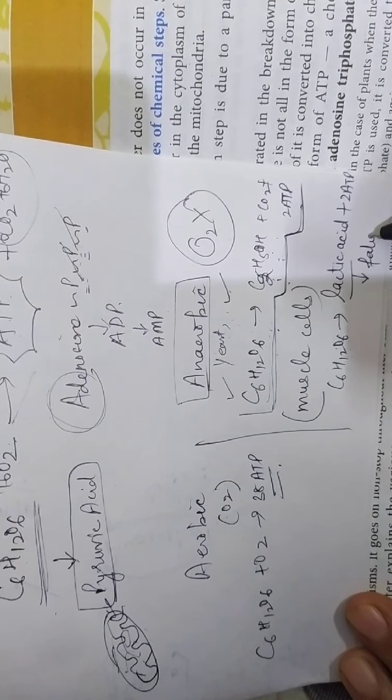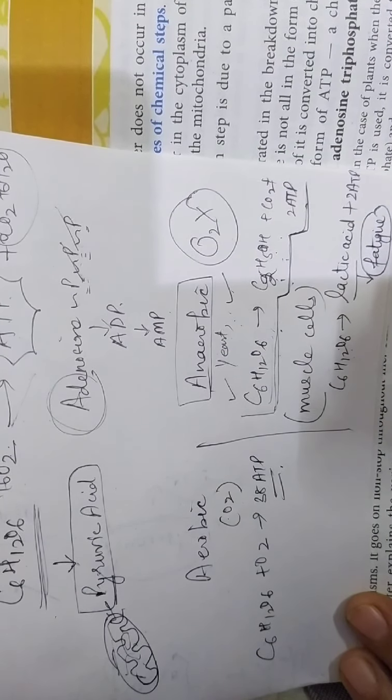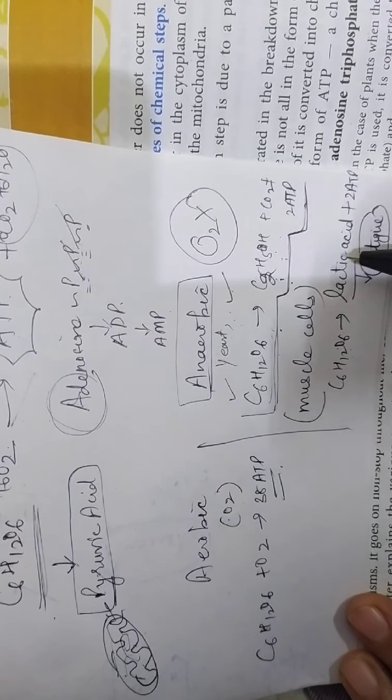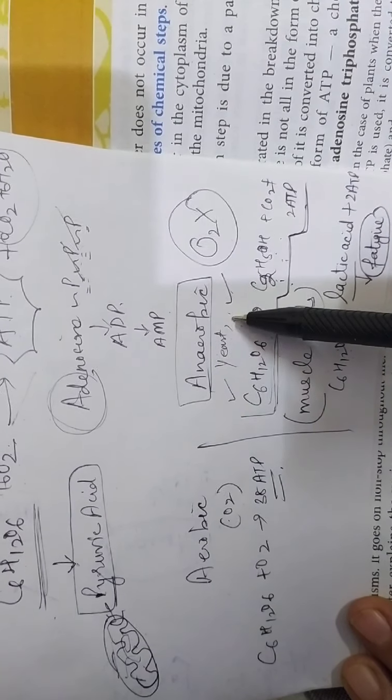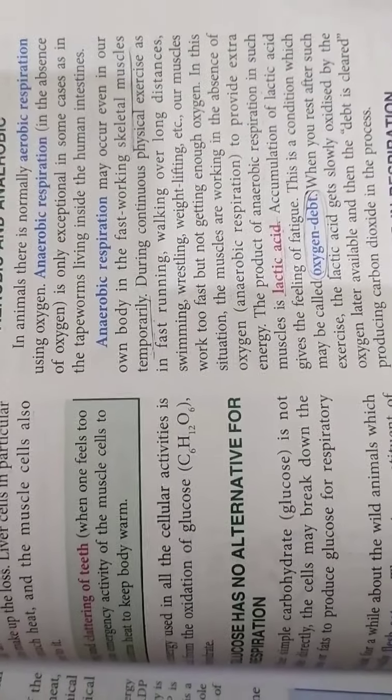And this lactic acid starts accumulating in the muscle cells and it causes fatigue. And due to this fatigue, there is a little pain in the cells, in the legs. And after some time, when this lactic acid is dissolved by oxygen, then the pain gets over. You have to remember this anaerobic and aerobic respiration.